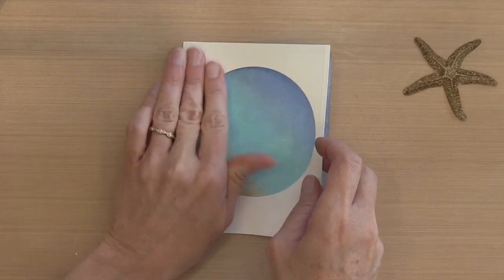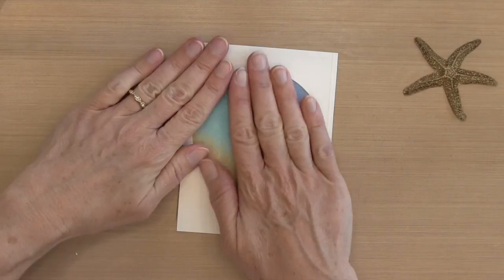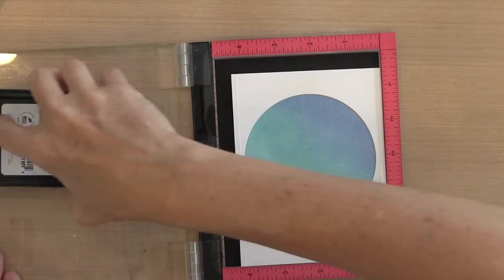I'm going to use one of the sentiments that comes in the set called Just a Note. I'm going to put it in my MISTI. I'm going to put it in the top area of the circle just to balance out the starfish and stamp it with some Hero Arts black ink.